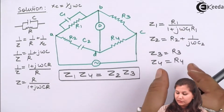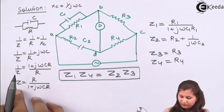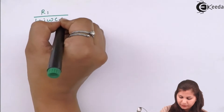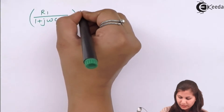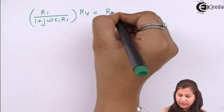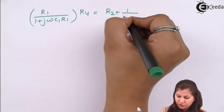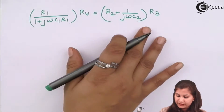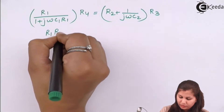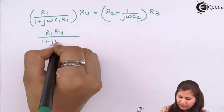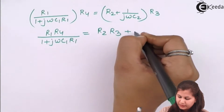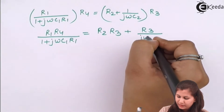Substituting the four impedances into the balance equation Z1·Z4 = Z2·Z3: [R1 / (1 + jωC1R1)] · R4 = [R2 + 1/(jωC2)] · R3. Solving this gives: R1·R4 / (1 + jωC1R1) = R2·R3 + R3/(jωC2).